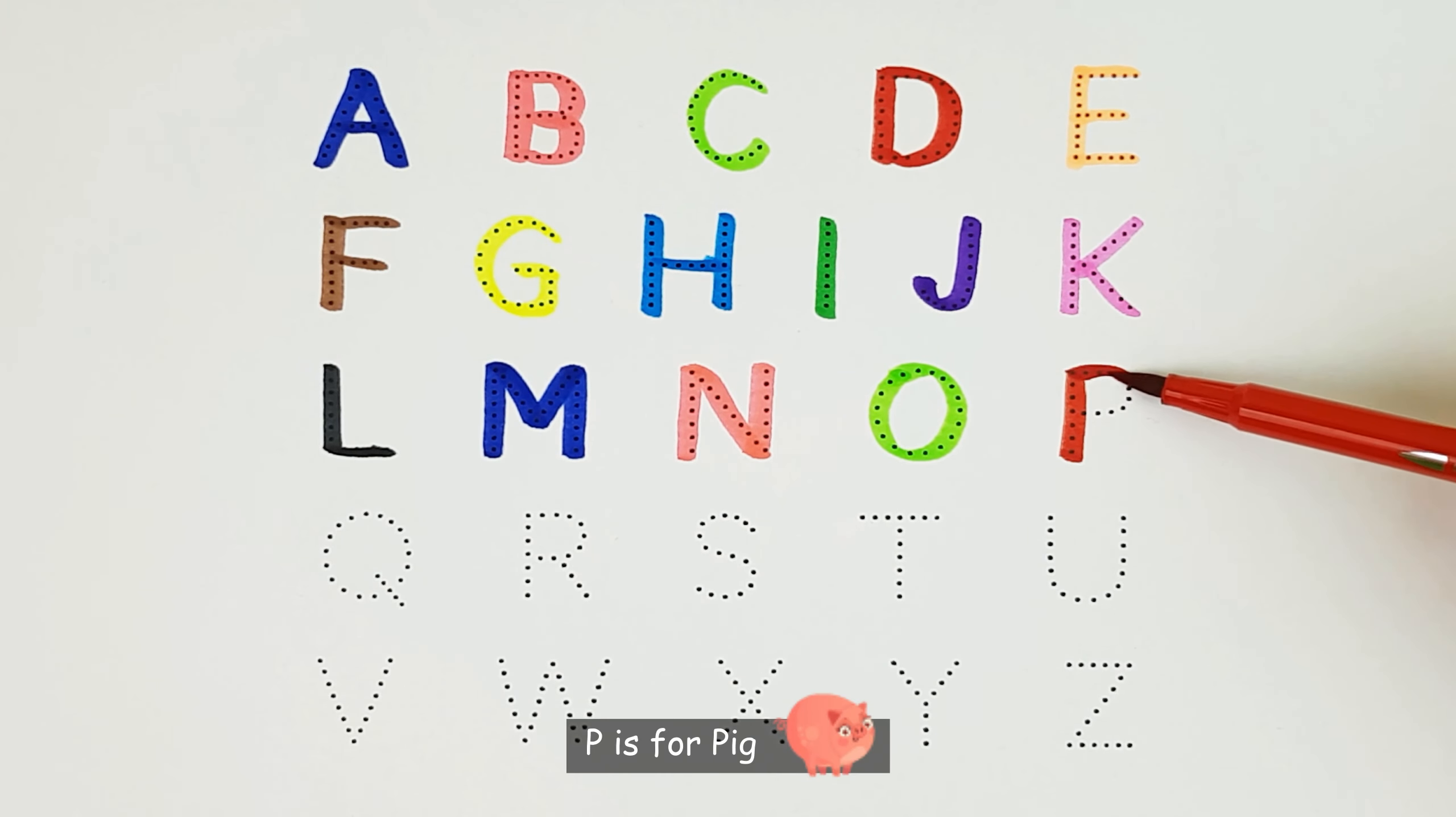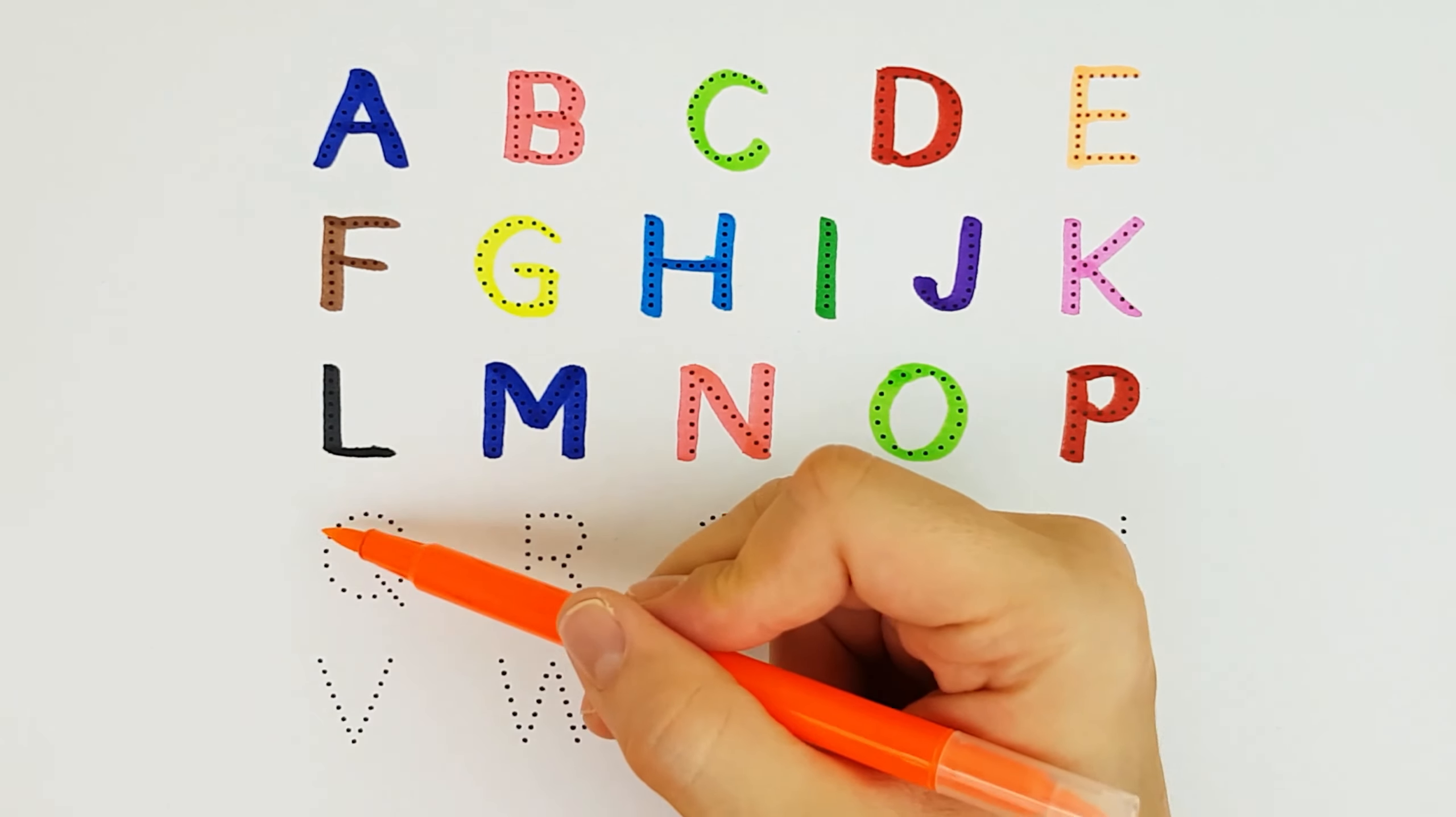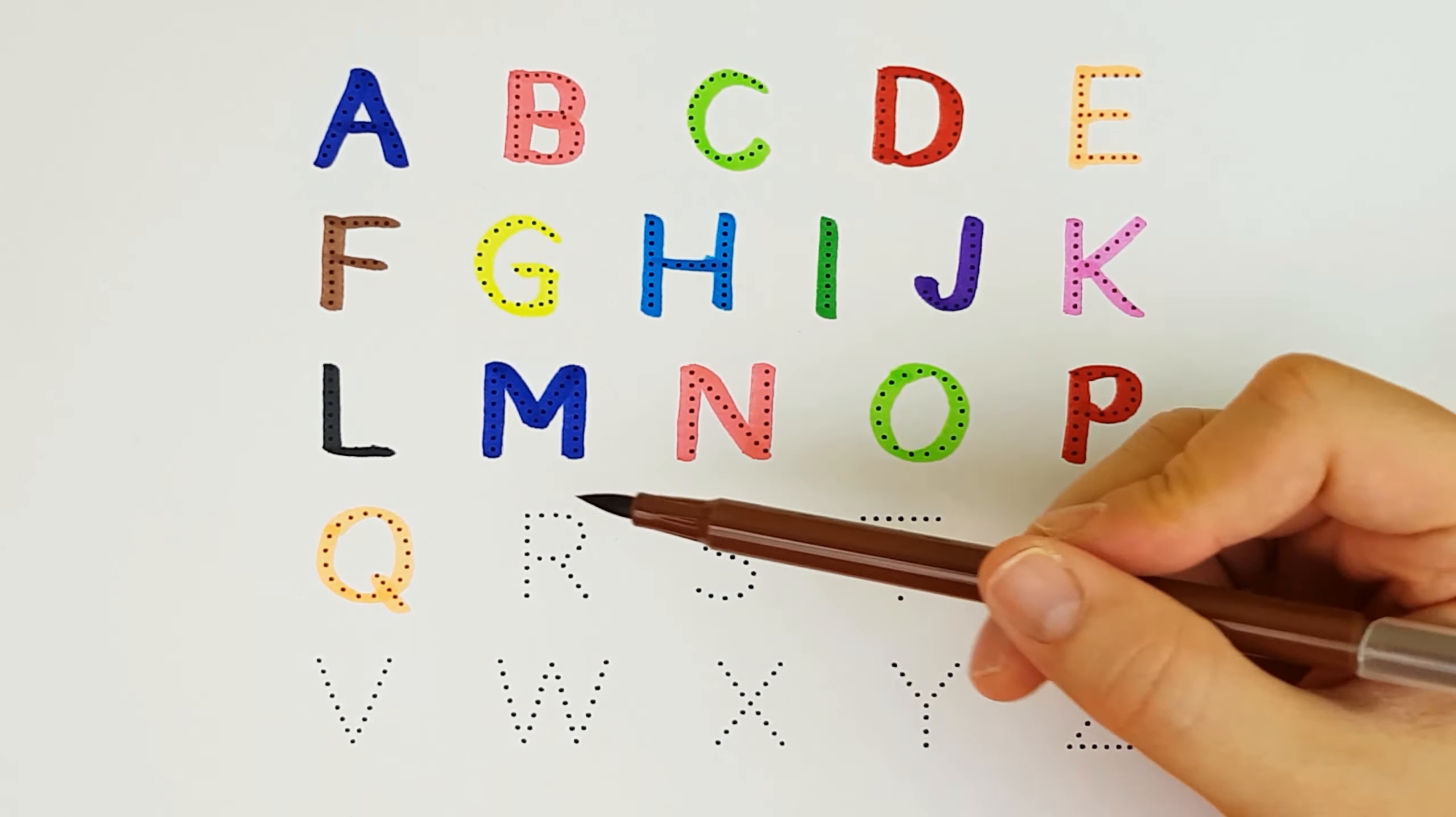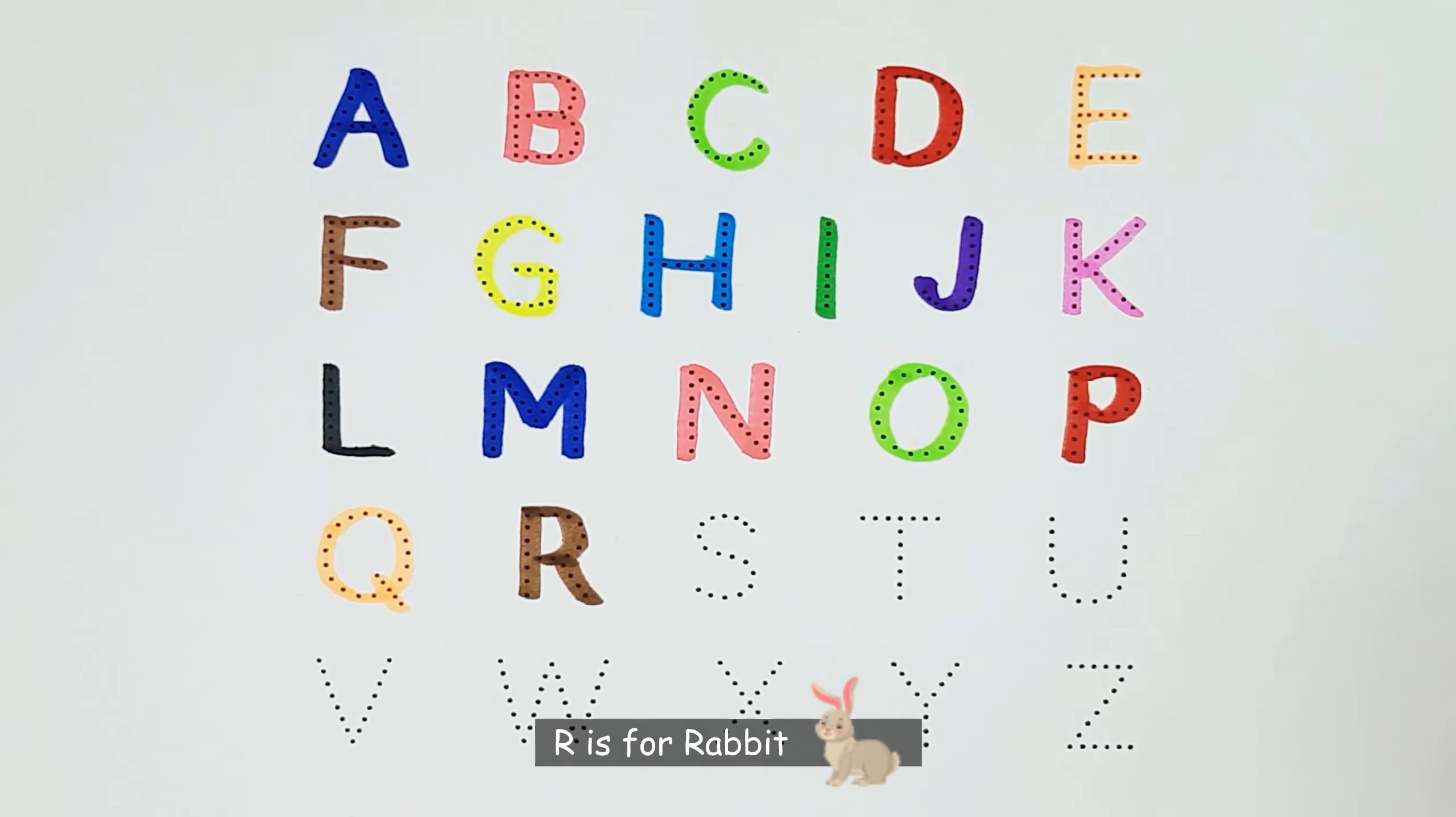P. P is for Pig. P. Q. Q is for Queen. Q. R. R is for Rabbit. R.